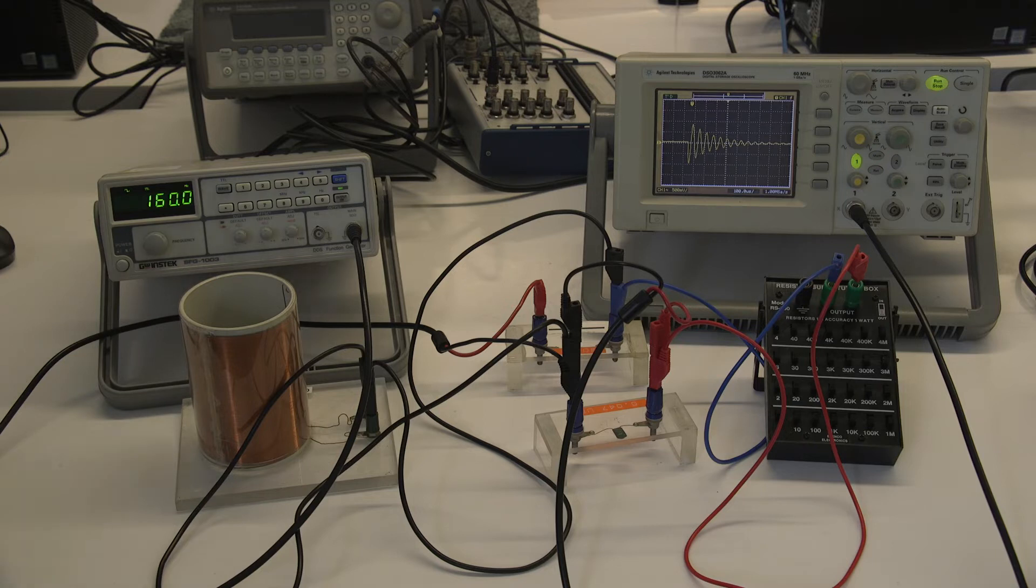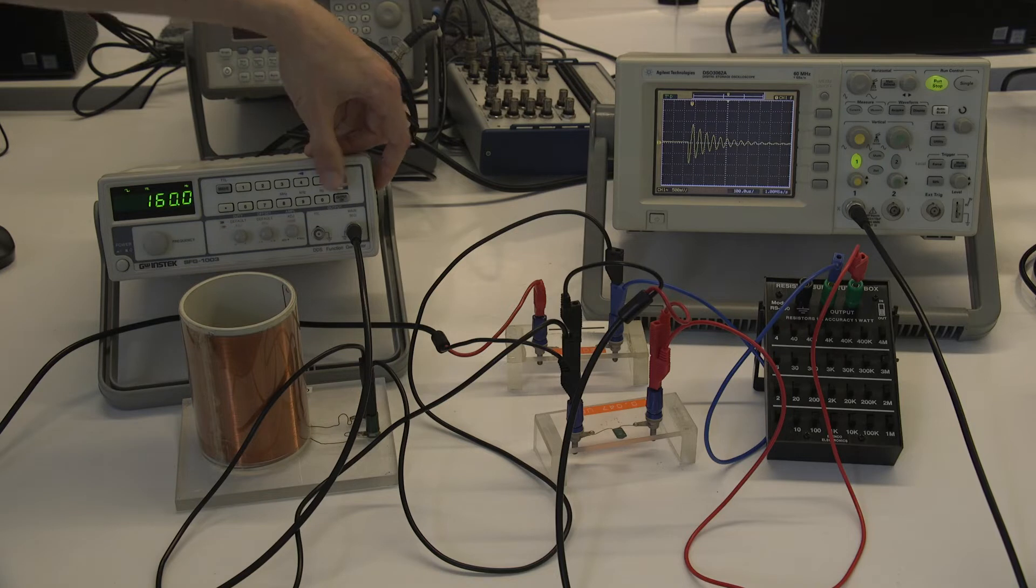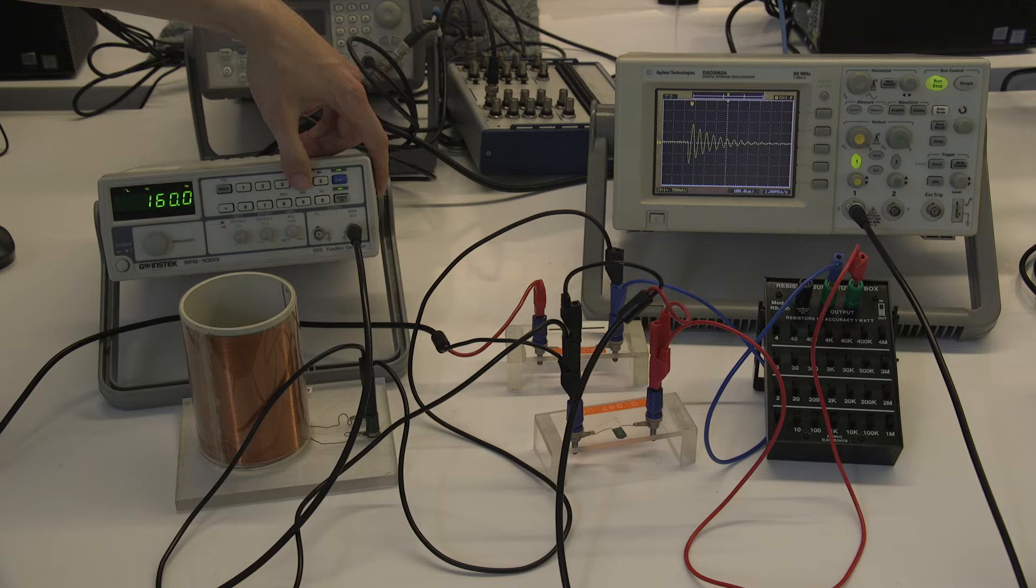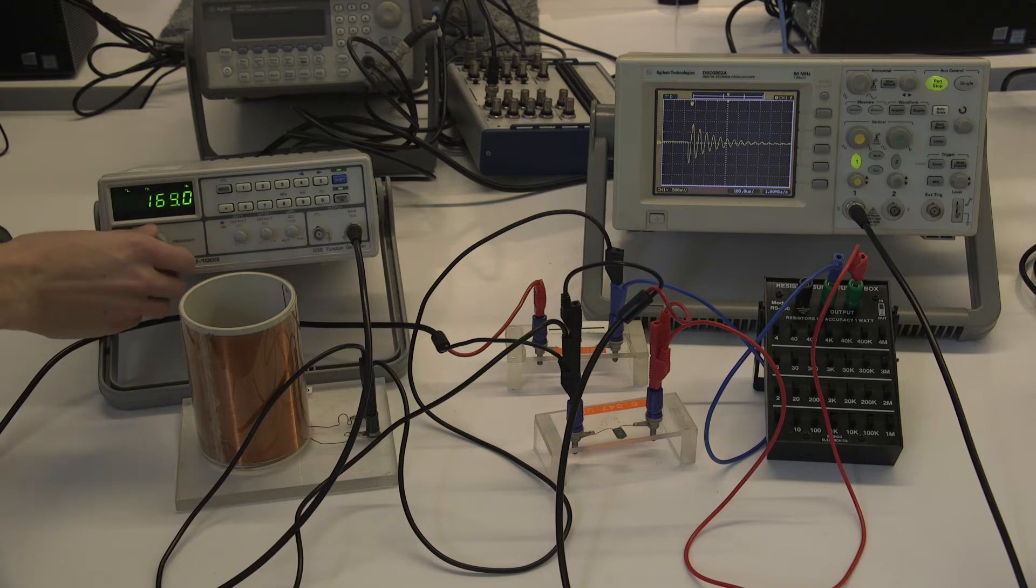If you wanted to change which number it's going to change every time you move the knob, you can press the shift key over here, and there are little left and right arrows. So you can see I can change whether I wanted to change the hundreds or the tens or the ones, and then the frequency knob will adjust to that one.